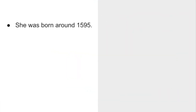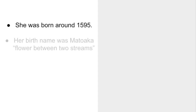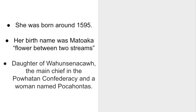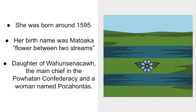Pocahontas was born in the late 16th century. She had many names, but her birth name was, or is believed to be, Matoaka, which means flower between two streams. She was nicknamed Pocahontas by her father, and she officially took that name when she came of age. She was the daughter of Wahunseneca, the main chief in the Powhatan Confederacy, and she was one of his favorite children.